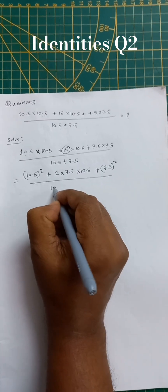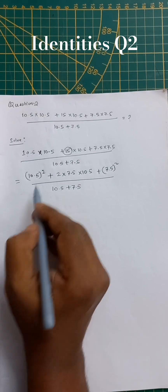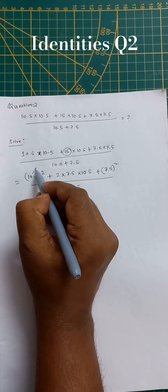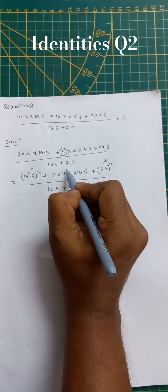Divided by 10.5 plus 7.5. So here you can see this is a, this is b, then you can see this one is b and a. So here you can see that a square plus 2ab plus b square.